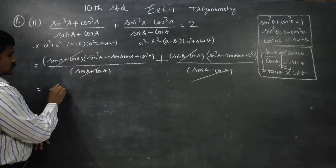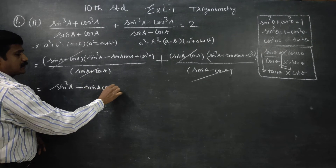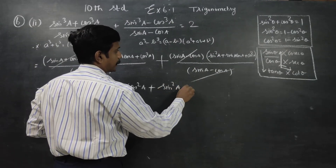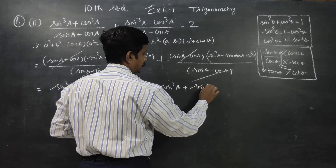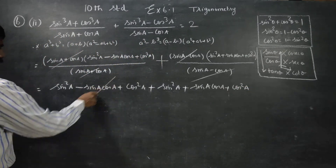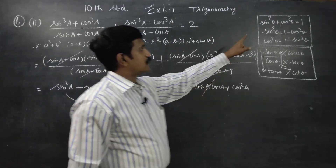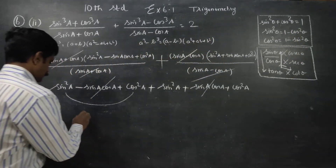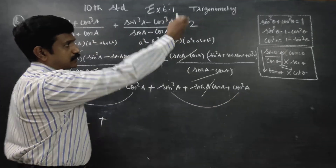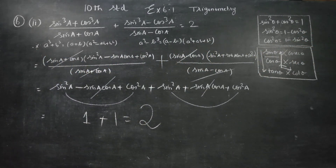We get sin square a minus sin a cos a plus cos square a, plus sin square a plus sin a cos a plus cos square a. This is the way to cancel: sin square a plus cos square a plus cos square a plus sin square a plus cos square a equals 1. So our answer is 1 plus 1 equals 2, hence proved.